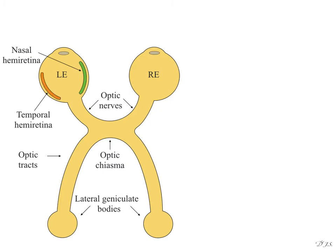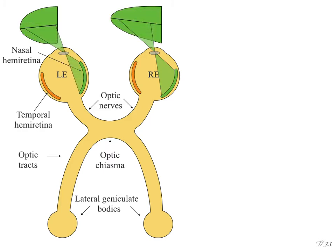For understanding the concept, I made two visual fields rather than one. The right eye temporal hemiretina looks at the nasal field of the right eye visual field, and the left eye nasal hemiretina looks at the temporal field of the left eye visual field. This means the right eye temporal and left eye nasal hemiretina together look at the left side of the common visual field, and the right eye nasal and left eye temporal hemiretina look at the right side.